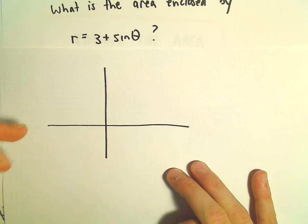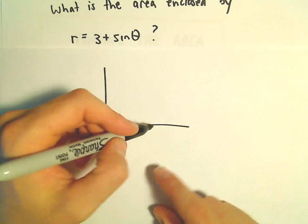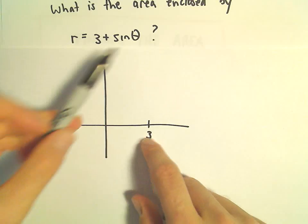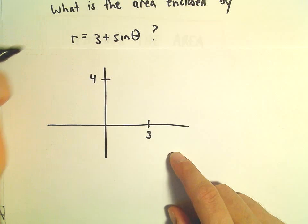If you want to see a quick sketch of this, at the angle 0, sine of 0 is 0, so we would be out at 3. At pi over 2, sine of pi over 2 is 1, so we would have 3 plus 1, so we would be at 4.